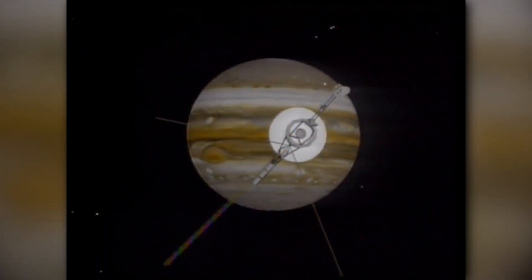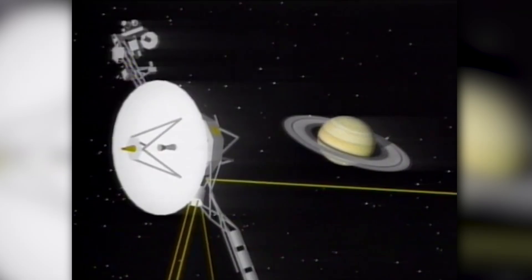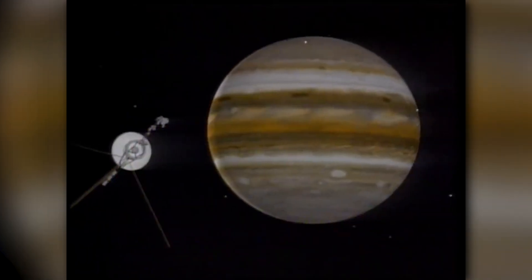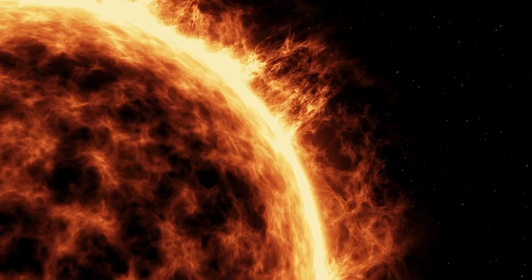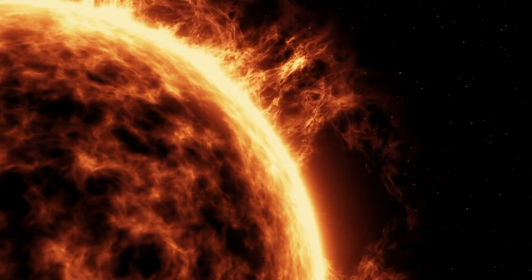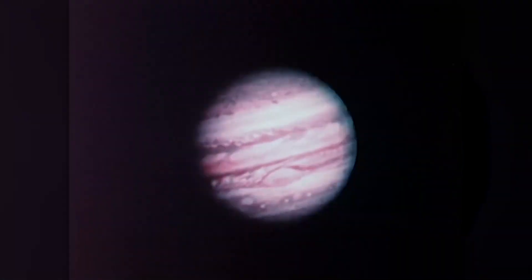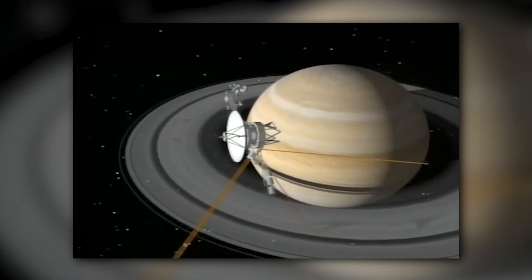The Voyagers' departure from Jupiter was a critical moment, receiving a gravity assist that propelled them towards Saturn. This boost was essential for escaping the Sun's gravitational pull and continuing their cosmic journey. Voyager 1, after bidding Jupiter farewell, approached Saturn.